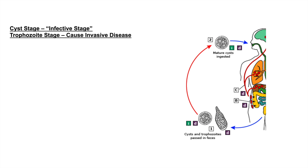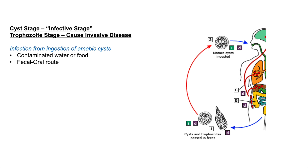So how do we get infected with this amoeba? There's a cyst stage of infection — that's the infective stage — and then there's the trophozoite stage, which is the stage that actually causes invasive disease. We get infection from ingestion of amoebic cysts, which can come from contaminated water or food, or via the fecal-oral route. Infected individuals release mature cysts in their feces, and these cysts can survive in the environment for weeks to months, making them very resilient.